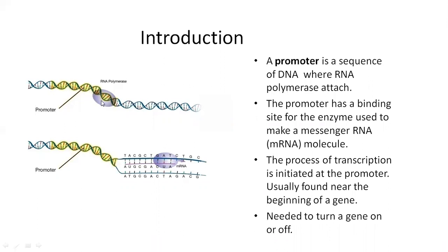After the attachment process, we study the molecular biology. After melting, new nucleotides start polymerization, and RNA synthesizes the new RNA in a specific direction. So a promoter is a sequence of DNA where RNA polymerase binds. The promoter is found at the beginning of a gene, and it is the responsibility of the promoter to turn the gene on or off.